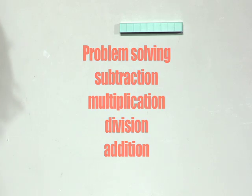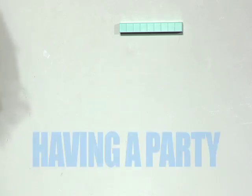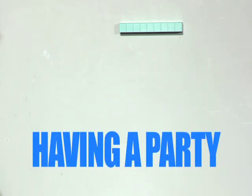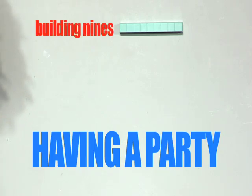But we play games, many, many games. One of the games is called having a party. And we can start with the lower numbers, but because of time constraints, we're going to start with nine. We've been playing building fives and sixes and sevens. And now we're going to play building nines.